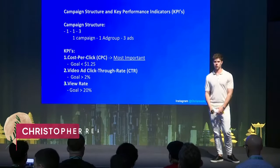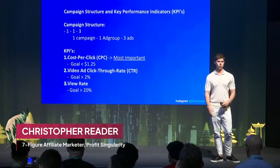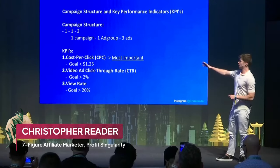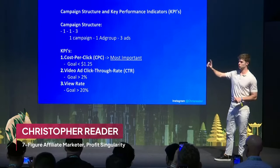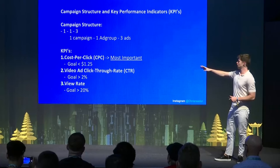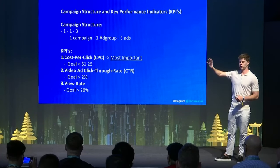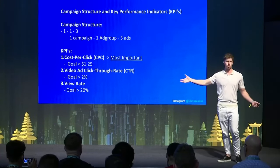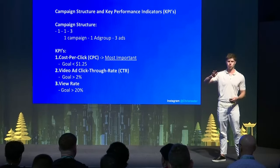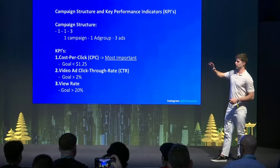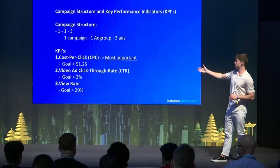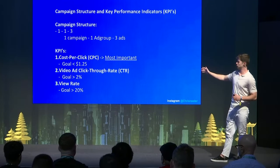First I'm going to go over the campaign structure and the key performance indicators. The campaign structure is a 1-1-3, which means one campaign, one ad group, and three ads. That's basically how I structure my YouTube Google ad account — one campaign, one ad group, and three different ads. The KPIs you want to look at are the cost per click, which is the most important.